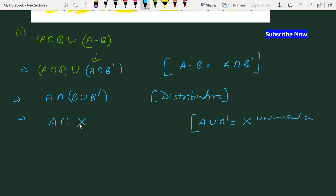So we get A ∩ X, where I'm denoting the universal set as X. A intersection with the universal set equals A. This proves the first part.